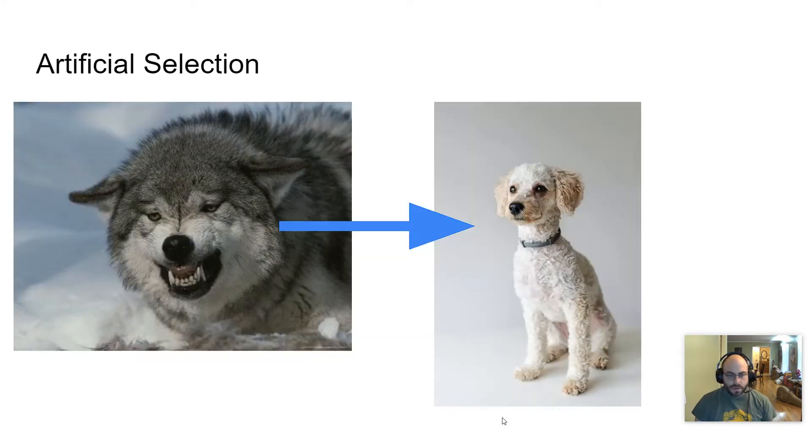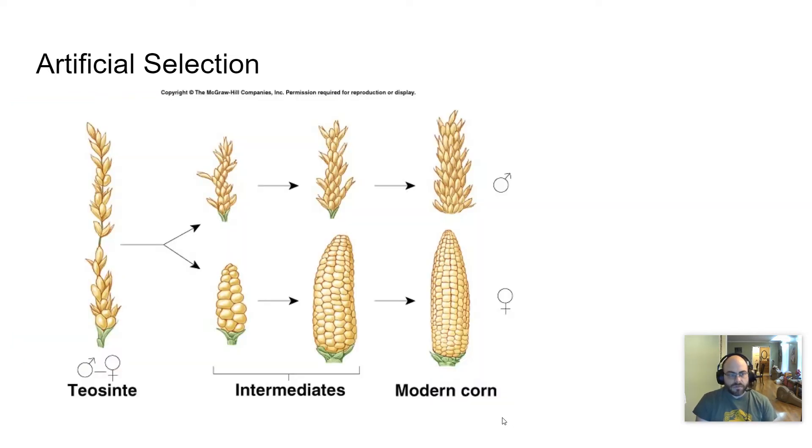Artificial selection is where humans make the choices. So take domestic dogs, for instance. You have there on the left a wolf that is particularly suited for its environment, able to survive. And on the right, you have a dog that is not suited for any environment other than a living room. And why is that? Well, because we like having dogs in our living rooms. And so we picked out traits that we thought were good, and over the course of many years, have made useless animals. And that's not a bad thing. There are many uses for artificial selection.